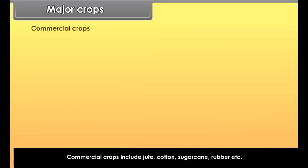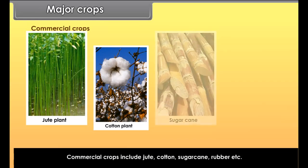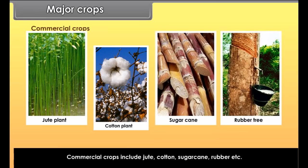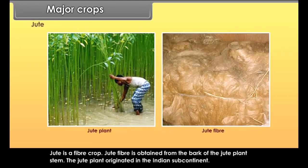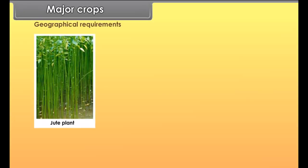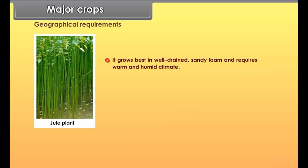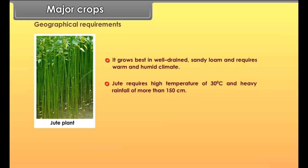Commercial crops include jute, cotton, sugarcane, rubber, etc. Jute is a fiber crop; jute fiber is obtained from the bark of the jute plant stem. The jute plant originated in the Indian subcontinent. It grows best in well-drained sandy loam and requires a warm and humid climate, with high temperature of 30 degrees Celsius and heavy rainfall of more than 150 cm.